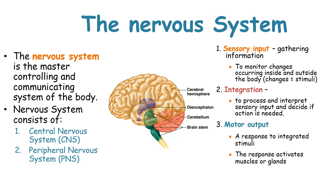The next function is integration. This is the processing and interpreting of sensory input and deciding if an action is needed. Then lastly, the motor output. This is a response to the integrated information, and this response activates muscles or glands.